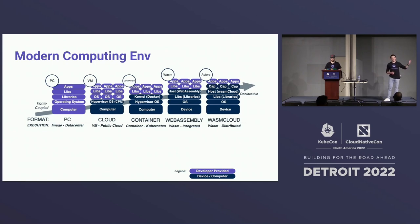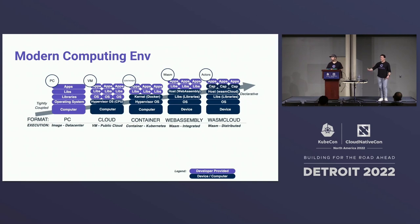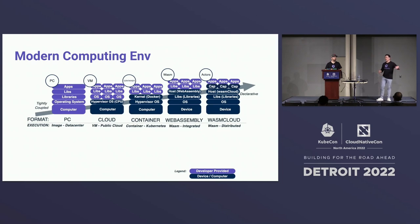Wasm Cloud takes this a step further and abstracts the capabilities or the non-functional requirements away from the application. To give you a concrete example — say a to-do app. The functional requirements are you want to create, read, update, delete to-dos. That's the code you, as a developer, are wanting to write — you have an idea and you want to implement that. The non-functional requirements are: I'm going to need to spin up a web server and listen on some port, I need to store this in some persistent data store, I need to pick which one and compile it in. All of that is abstracted away, so you just get down to writing your business logic or your idea.